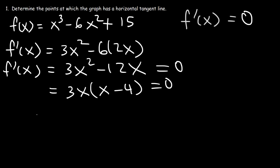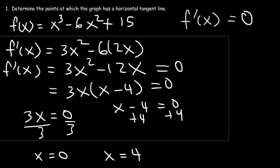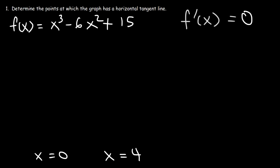Setting each factor equal to zero: from 3x equals zero, dividing by 3 gives x equals zero; and from x minus 4 equals zero, adding 4 to both sides gives x equals 4. So the two x-values where horizontal tangent lines occur are x equals 0 and x equals 4.